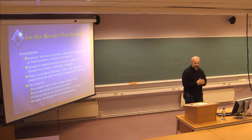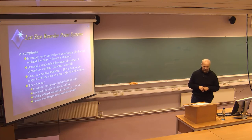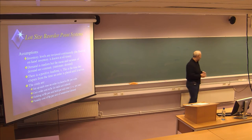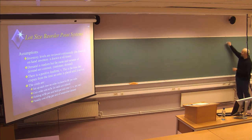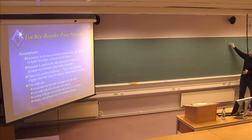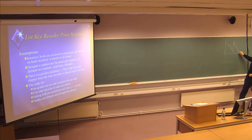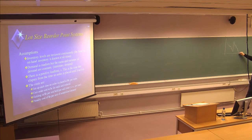We will continue with the QR models, or the lot size reorder point models. These are models quite similar to what we have seen with deterministic or fixed demand, but now you have uncertainty. You don't have a straight line — you have varying demands. You also need to consider what we call the safety stock, to try to prevent the possibility of a stockout.